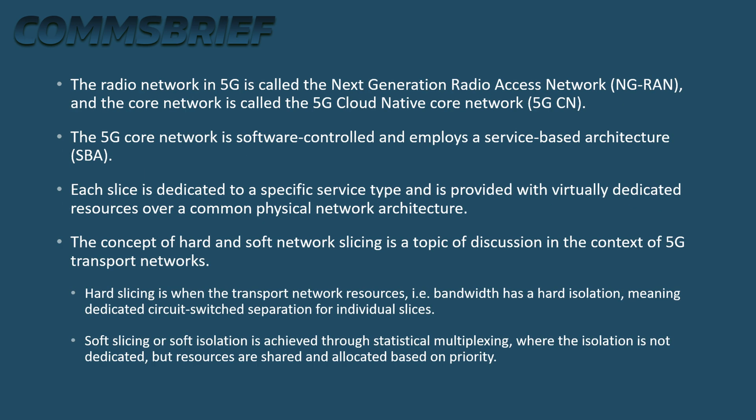The radio network in 5G is called the Next Generation Radio Access Network (NGRAN), and the core network is called the 5G cloud native core network (5G-CN). The 5G core network is software-controlled and employs a service-based architecture (SBA). Each slice is dedicated to a specific service type and is provided with virtually dedicated resources over a common physical network architecture.